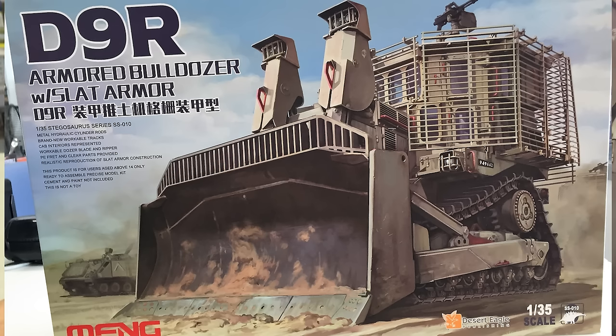This one has metal hydraulic cylinder rods, workable tracks, complete cab interior which is really nice, and they also give you two types of glass. The bluish toned one gives it the effect of the armored bulletproof glass.